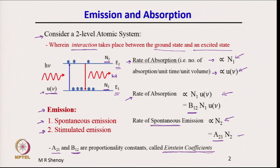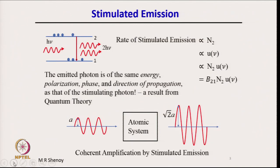The spontaneous emission rate is A21 × N2. Now, stimulated emission is illustrated as follows: an incident photon, called the stimulating photon, stimulates a downward transition of an atom in the excited state, such that the energy emitted is the same as that of the stimulating photon. The emitted photon has the same energy, same polarization, and is in phase and in the same direction of propagation as the stimulating photon — a result from quantum theory.